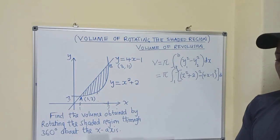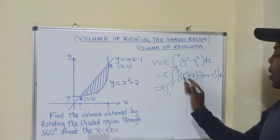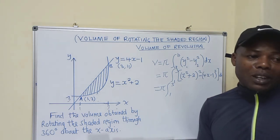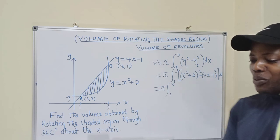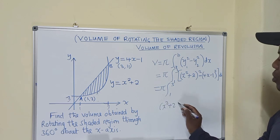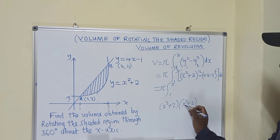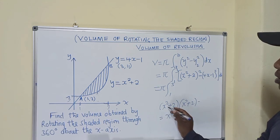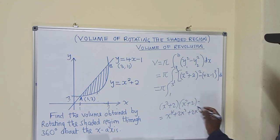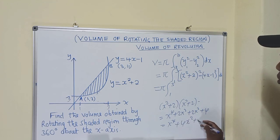So now we can simplify. We have pi, integral from 1 to 3. This x squared means what is inside must be multiplied by itself: x squared plus 2, multiplied by x squared plus 2. When we multiply, we get x to the power 4, plus 2x squared, plus 2x squared, plus 4, which gives x to the power 4 plus 4x squared plus 4.